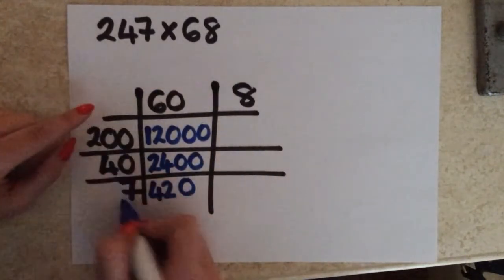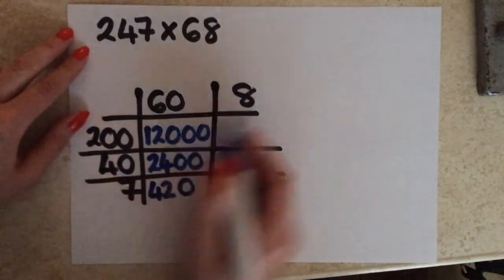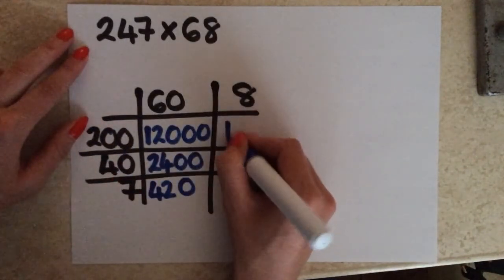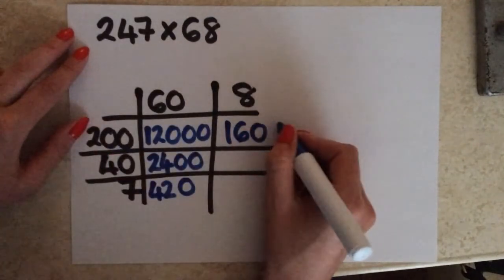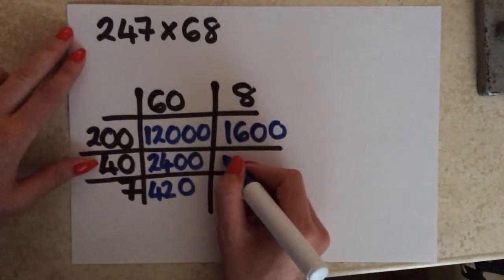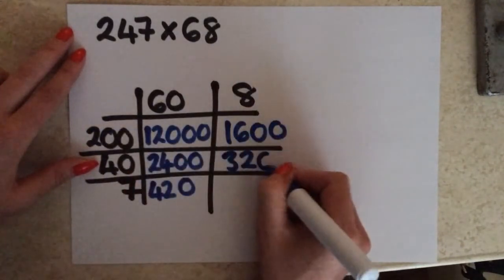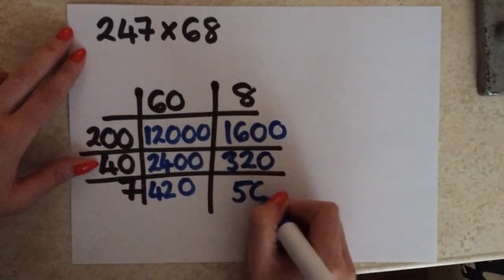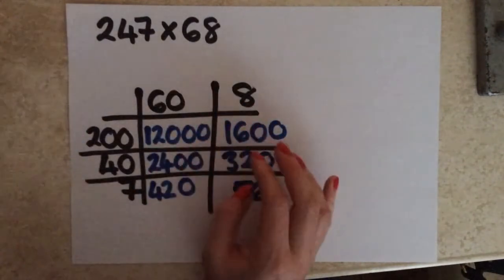Then I'm going to multiply all these 3 numbers by 8. So firstly, 200 times 8: so 2 times 8 is going to give me 16, and then I've got 2 zeros — so that's 1,600. And then 4 times 8 is going to give me 32, with just 1 zero on the end — so that's 320. And then 7 times 8 is going to give me 56.